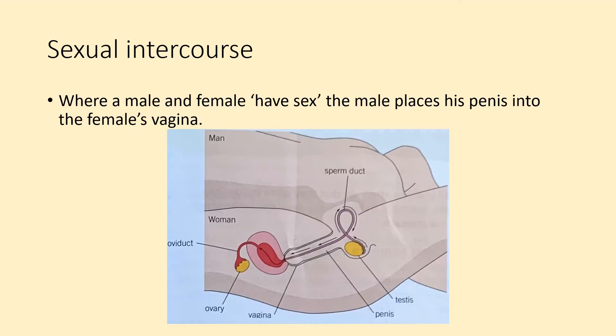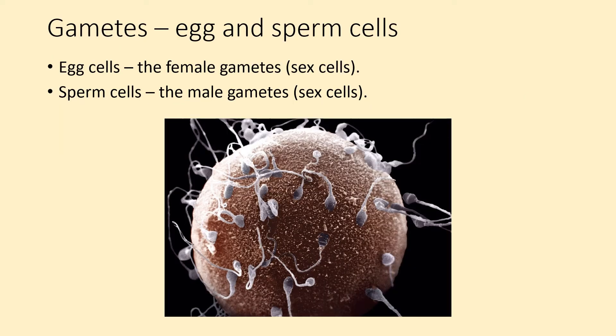So, sexual intercourse is where a male and a female have sex. The male places his penis into the female's vagina — and you've got a diagram cross-section there. Gametes means sex cell; egg and sperm cells are gametes.